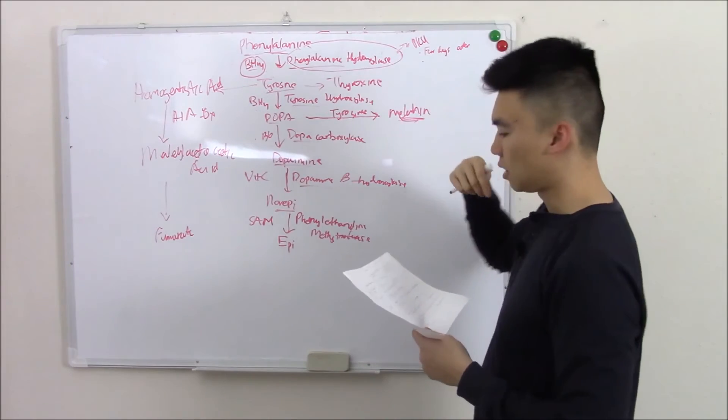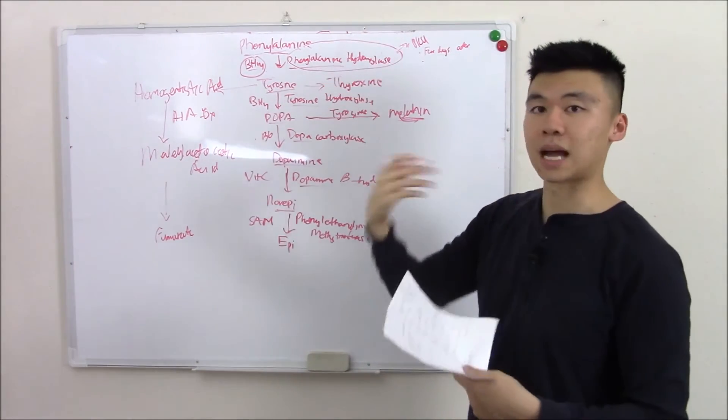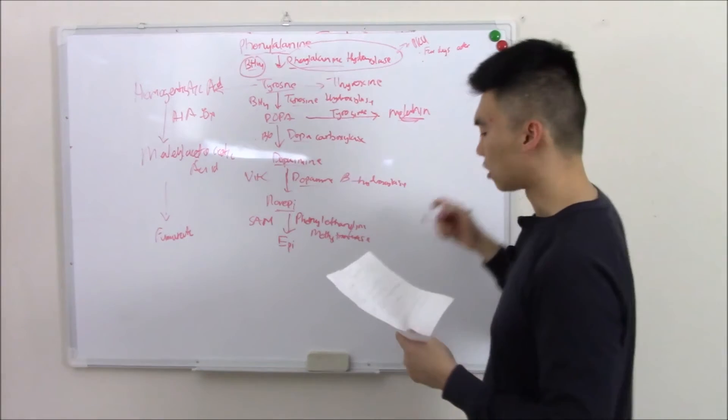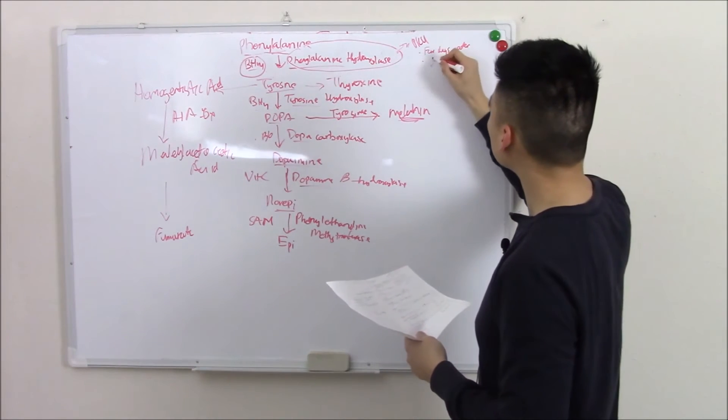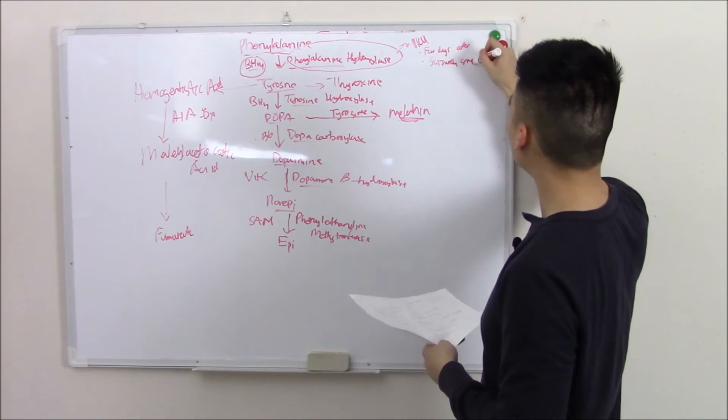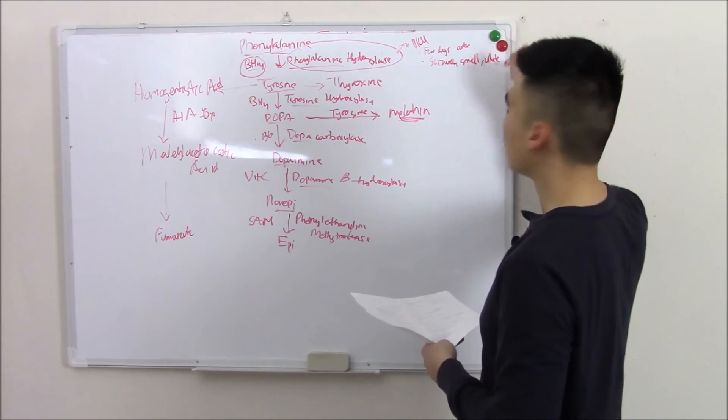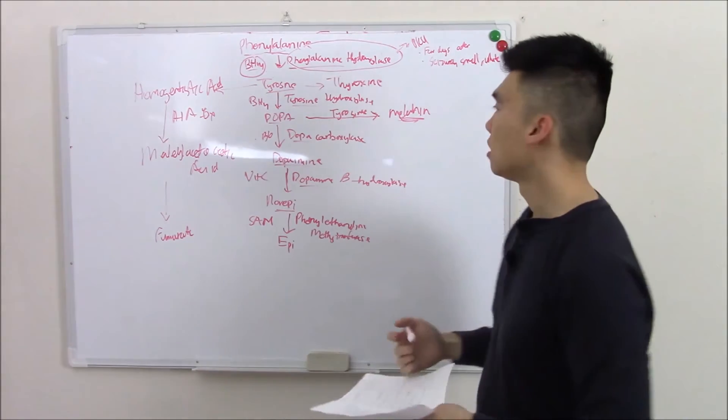And signs, they're gonna have a musty mousy odor. It's because phenylalanine metabolites causes smell. They're also gonna have seizures and they're gonna have very pale skin. Why is that?